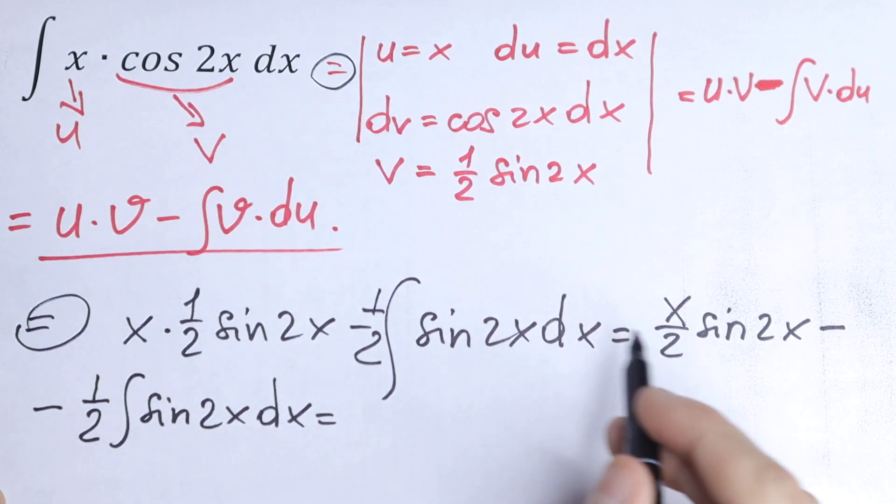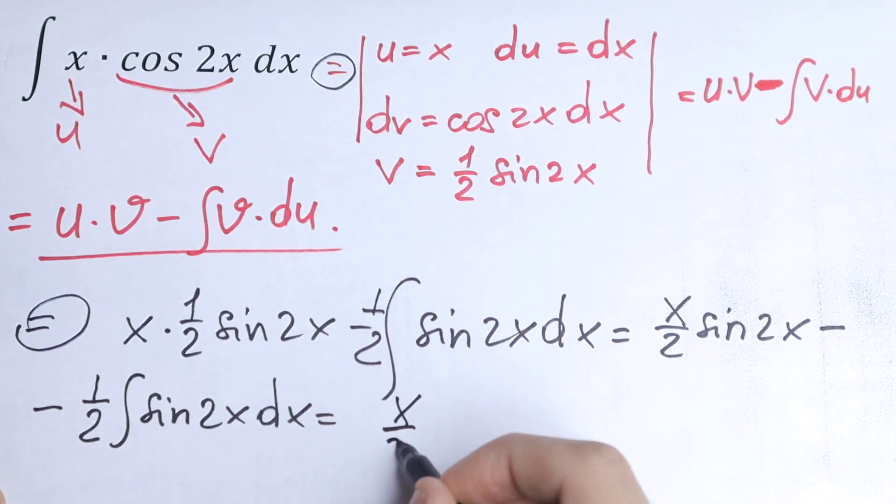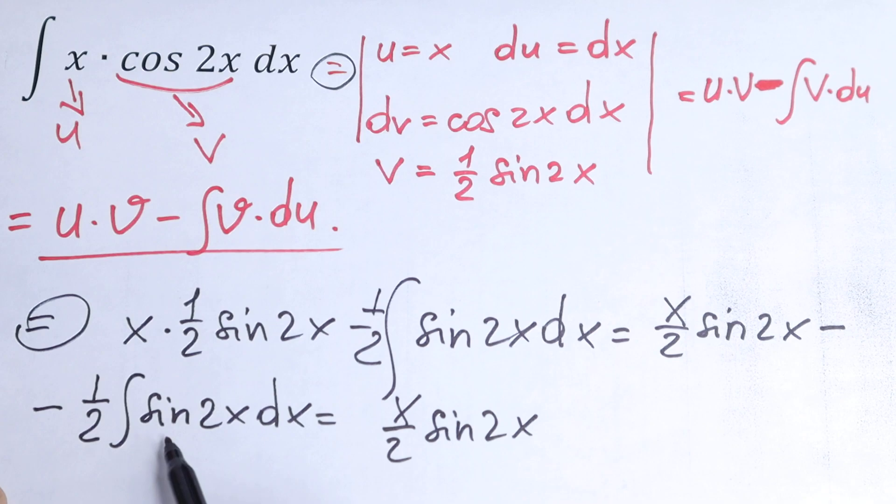So let's find this integral right here. We'll have the same x over 2 sine 2x. And this integral, of course, we can find. This is a table case. This will be cosine 2x.